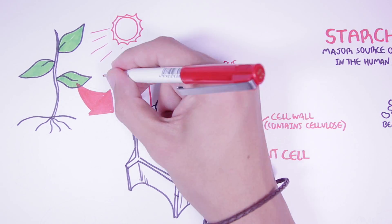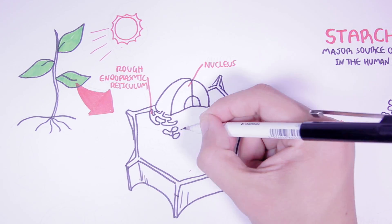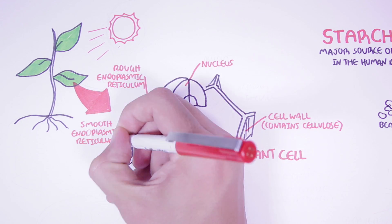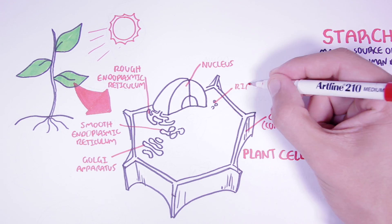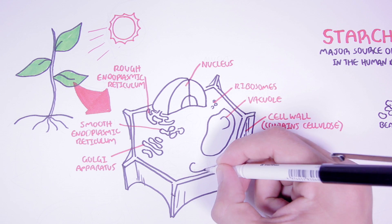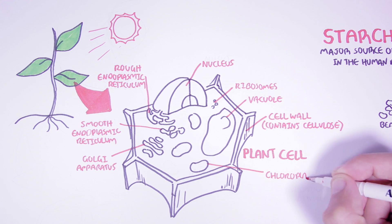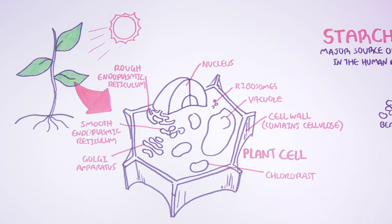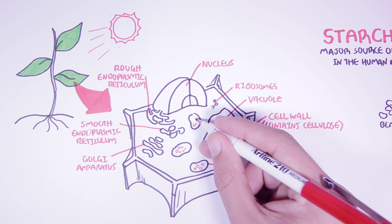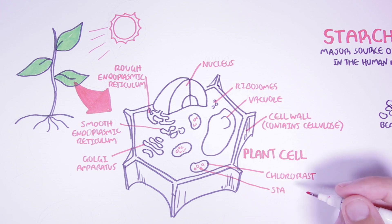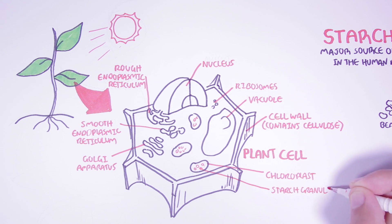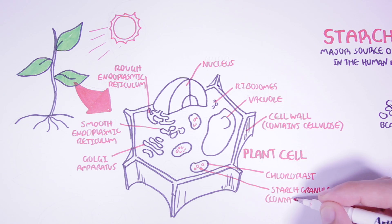Within the plant cell we can also find the nucleus, the rough endoplasmic reticulum, the smooth endoplasmic reticulum, Golgi apparatus, ribosomes, and vacuole. And here is what's known as a chloroplast — the organelle that carries out photosynthesis. Within the chloroplast we can find starch granules where starch is stored.